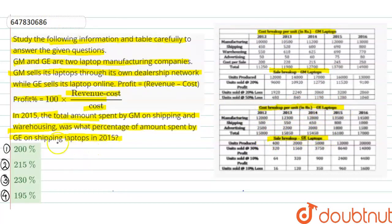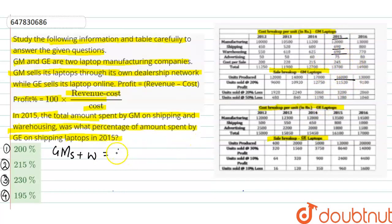If we look at the question, we need the cost of shipping plus warehousing. The shipping and warehousing cost is 690 and 690 per unit. Total units are 16,000. So, 690 plus 690 equals 1380.